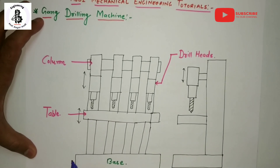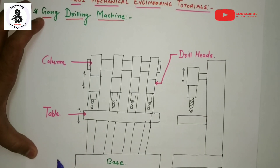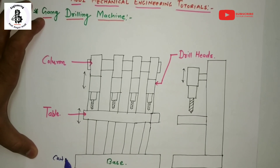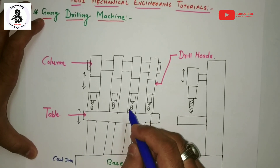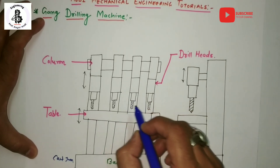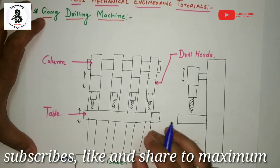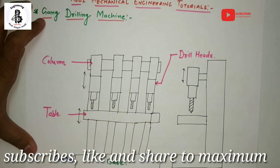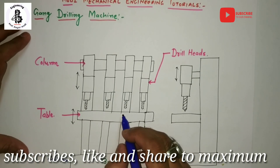As we discussed previously, the base of any kind of machine is made of cast iron material. This provides support to the entire assembly of the machine and also withstands vibrations and cutting forces during drilling operations.